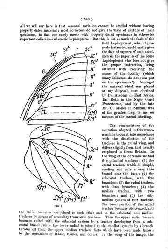Erect: the palpi when vertical, i.e. the axis of the palpi is at right angles to the axis of the body. Exarate: pupae with their legs and other appendages free and extended.